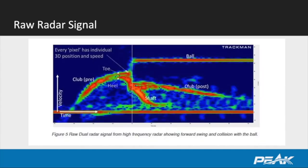In comparison, here's a view of the raw data capture that comes from TrackMan. It's pretty similar to what we see with all the radar devices. Going up this side, we've got velocity and time. This first disturbance going through this area is the club — when it disturbs that radar signal being emitted from the box.